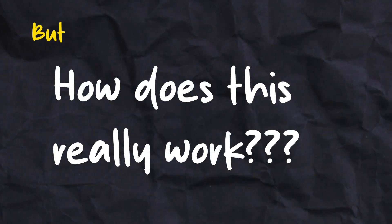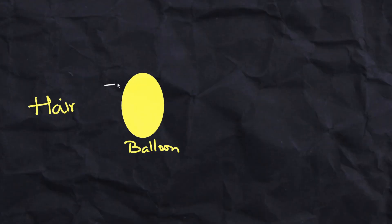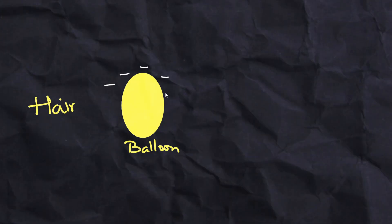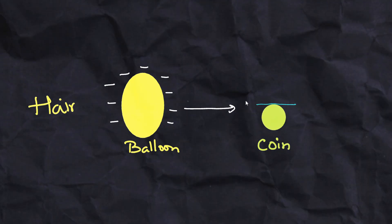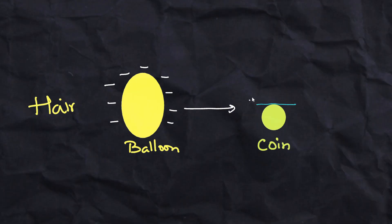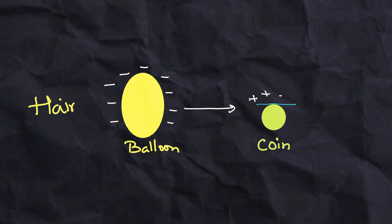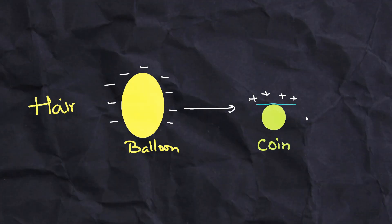But how does this really work? When you rub the balloon, it gains extra electrons and becomes negatively charged. The electric field from the balloon penetrates the cup and affects the toothpick, demonstrating how electric fields can extend beyond physical barriers.